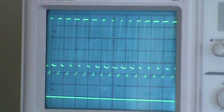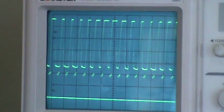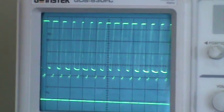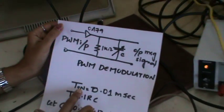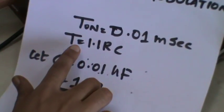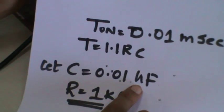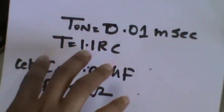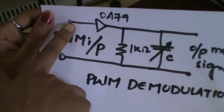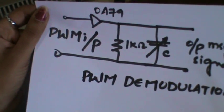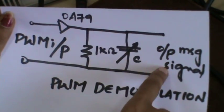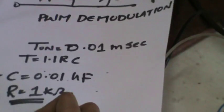For demodulation of PWM, use the same simple connection as previous demodulations: connect the diode (1N4007 or equivalent) to a resistor in combination with a capacitor. Take T-on as 0.01 millisecond, T = 1.1RC, and choose the capacitor value as 0.01 microfarad — the resistance value will be 1 kilohm. Give the PWM modulation output to the positive-going edge of the diode and observe the output across the capacitor. The output across the capacitor will normally appear noisy.